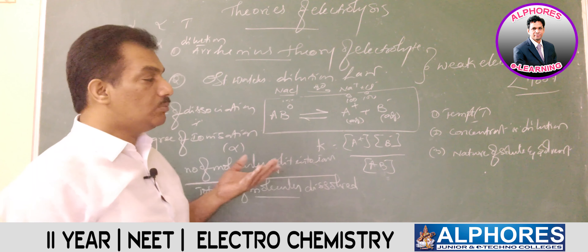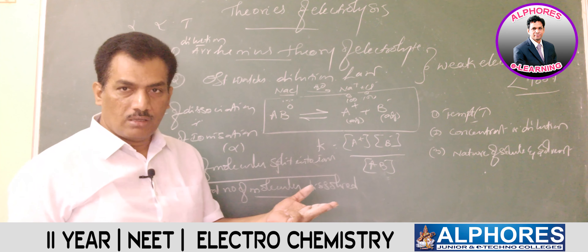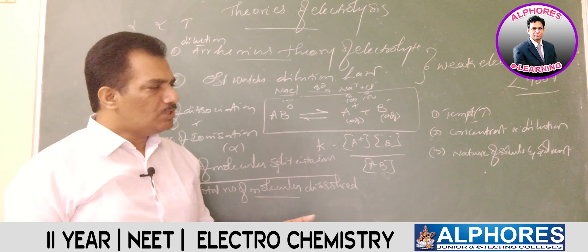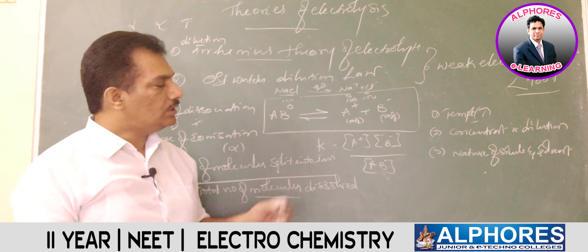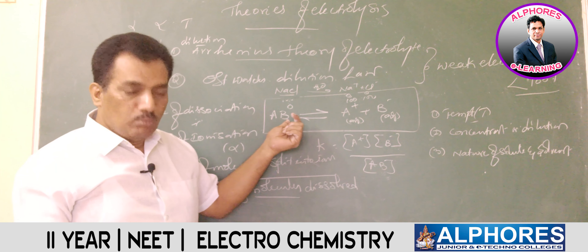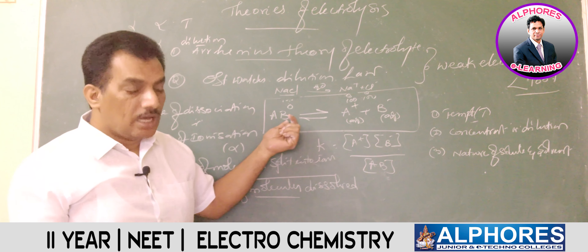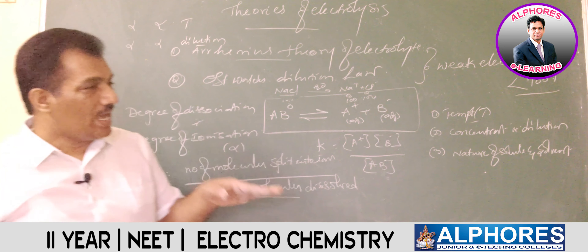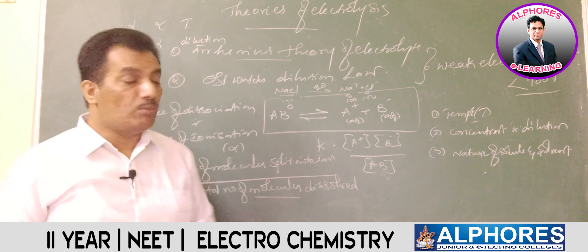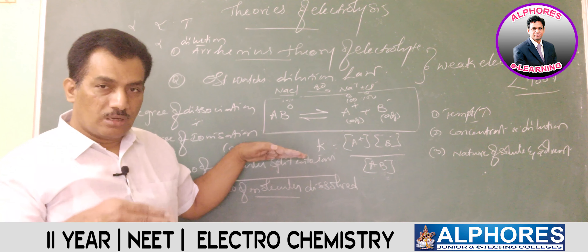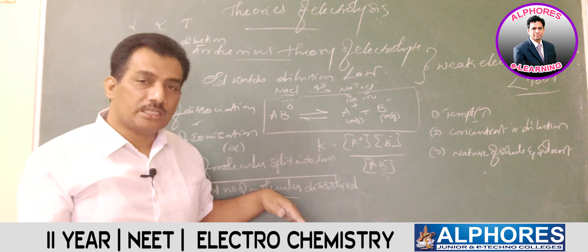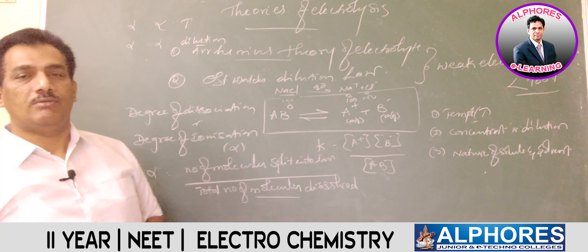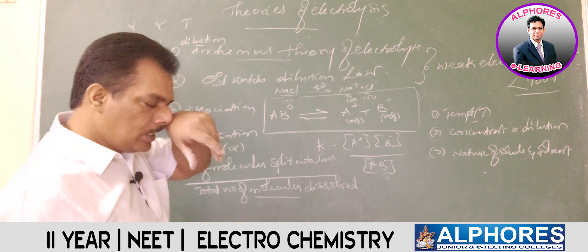The third factor is the nature of solute and solvent. If the solute is ionic, it is a strong electrolyte and produces more ions. If it is polar (partially ionic, partially covalent), it establishes an equilibrium — more polar means more ions generated. The solvent's dielectric constant is also important: a solvent with higher dielectric constant causes greater degree of dissociation.